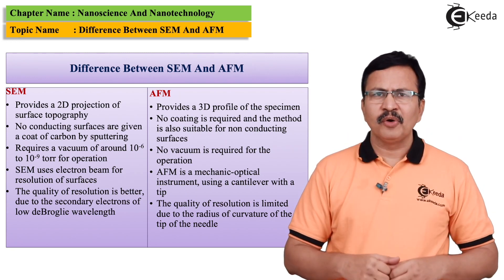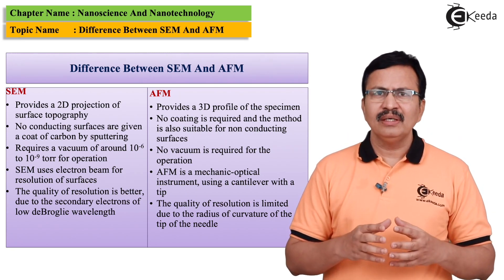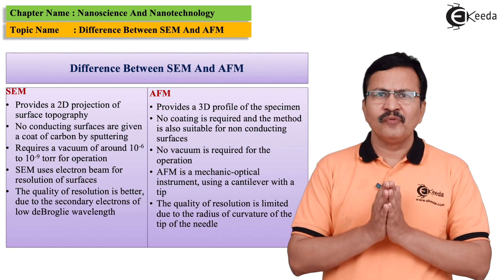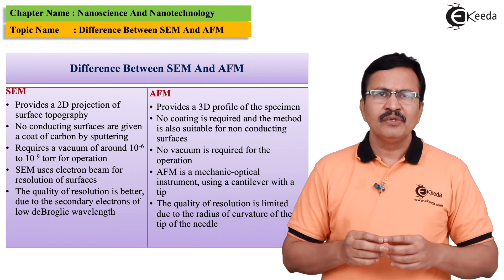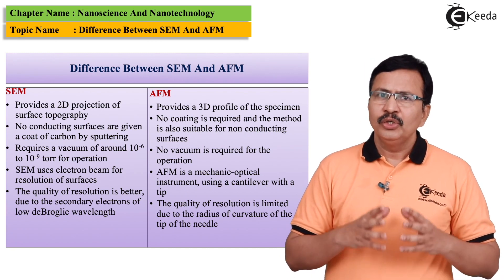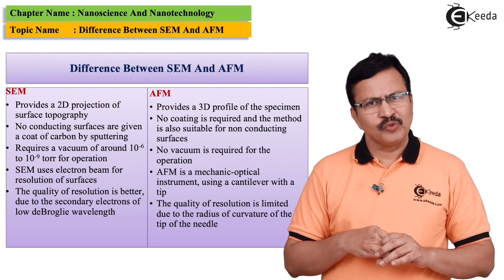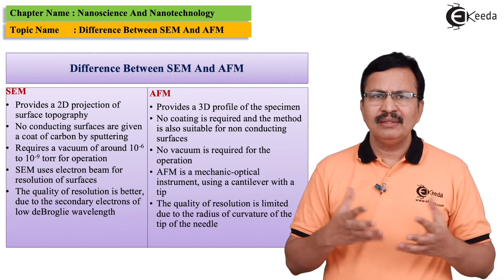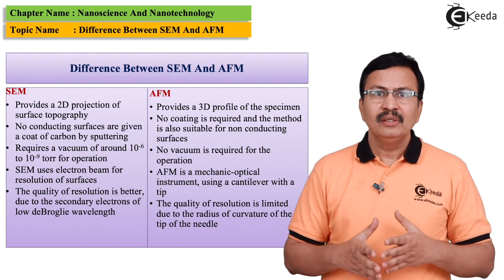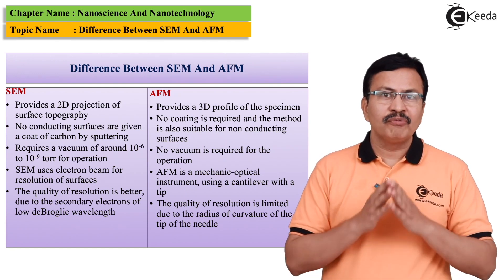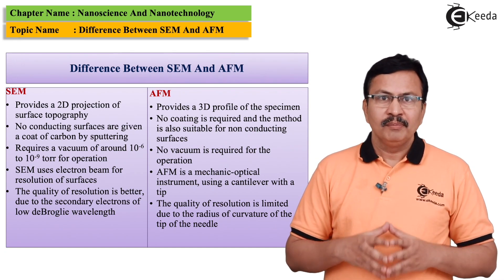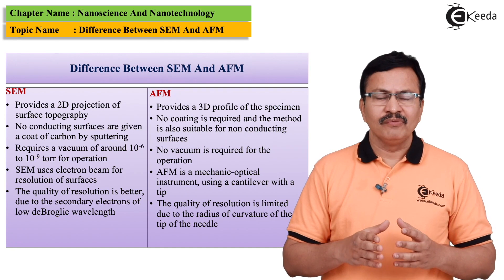A major disadvantage of SEM is that it requires a very high degree of vacuum, which is around 10⁻⁶ to 10⁻⁹ torr. As you know, the atmospheric pressure corresponds to 760 torr — so just imagine the low magnitude of 10⁻⁶ or 10⁻⁹ torr, because in SEM we use electrons.